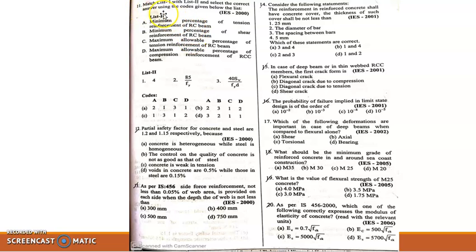Question 11 is a matching type question: Match list 1 with list 2 and select the correct answer. List 1 contains: A, minimum percentage of tension reinforcement of RCC beam; B, minimum percentage of shear reinforcement of RCC beam; C, maximum allowable percentage of tension reinforcement of RCC beam; D, maximum allowable percentage of compression reinforcement of RCC beam.